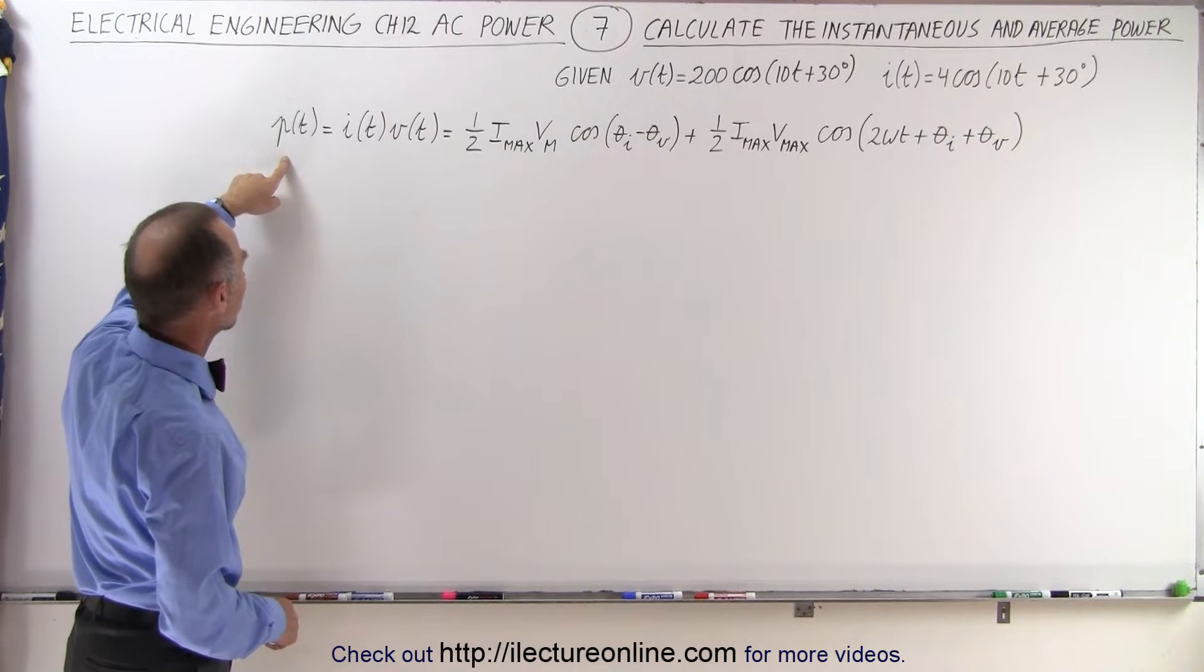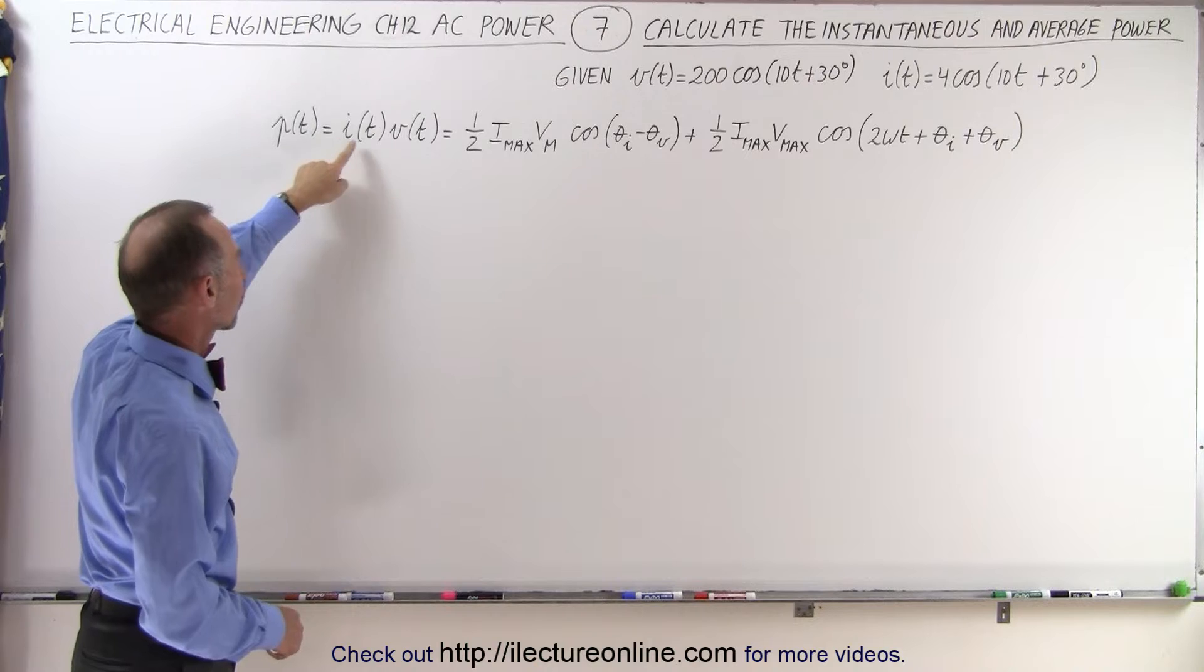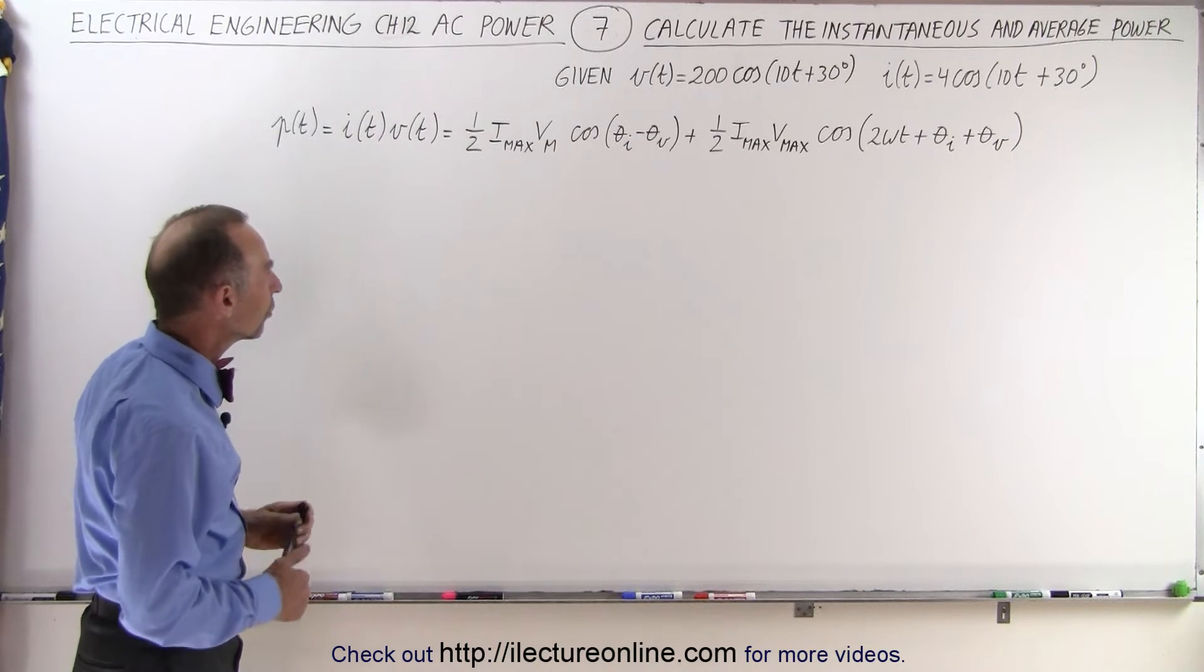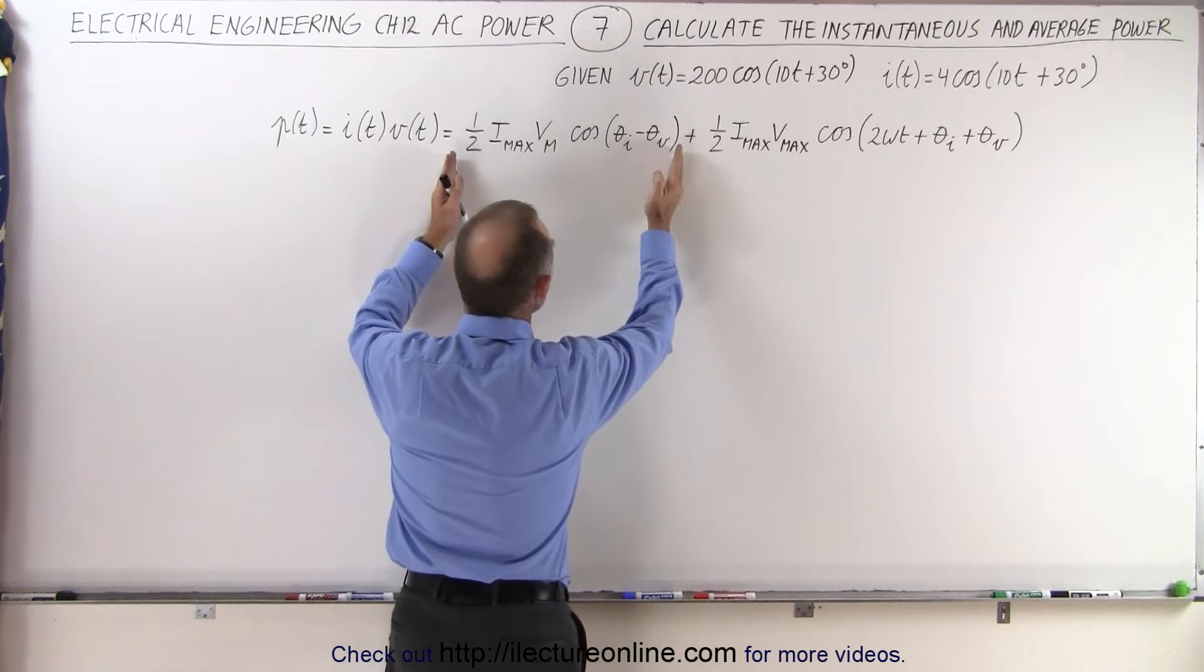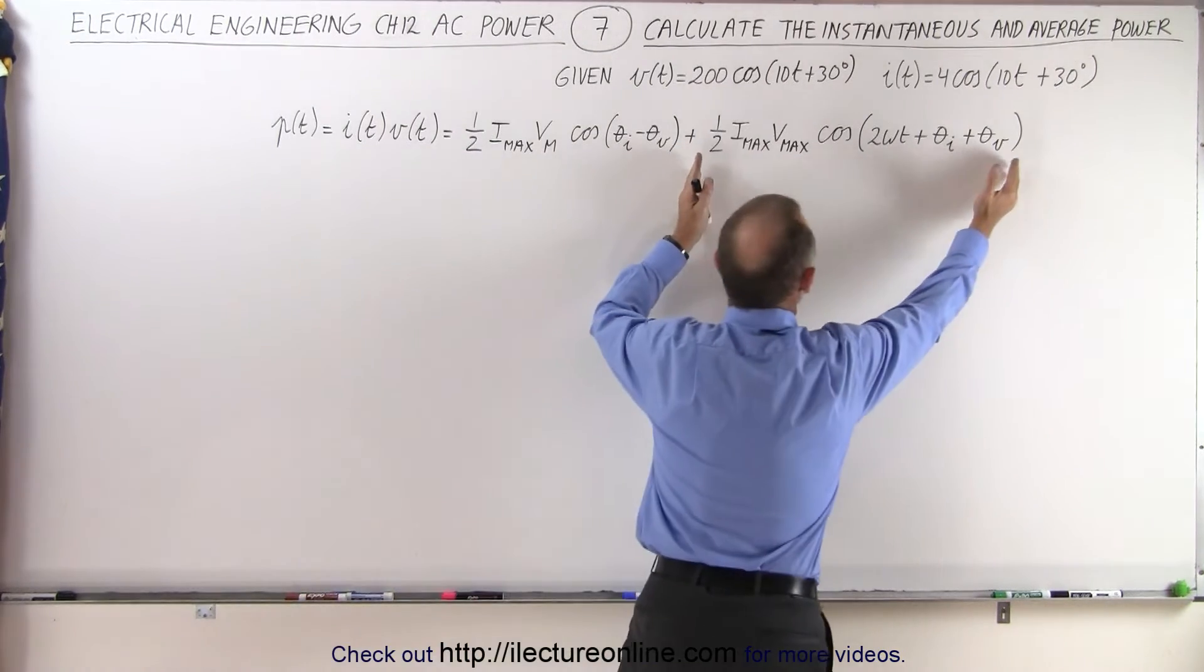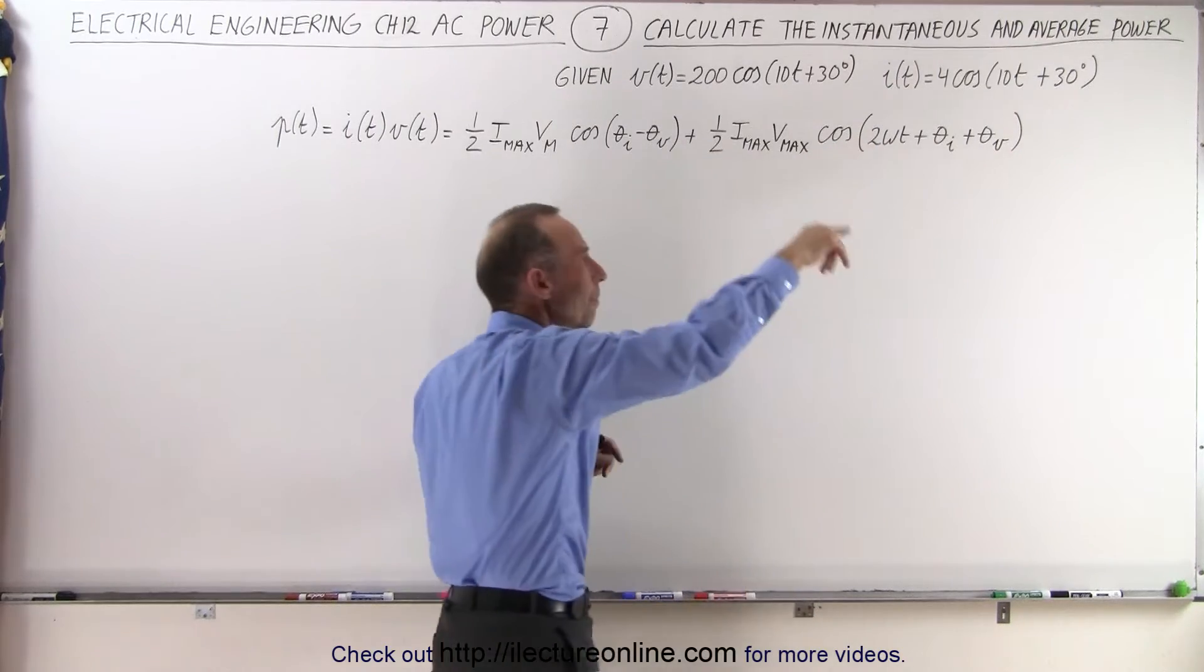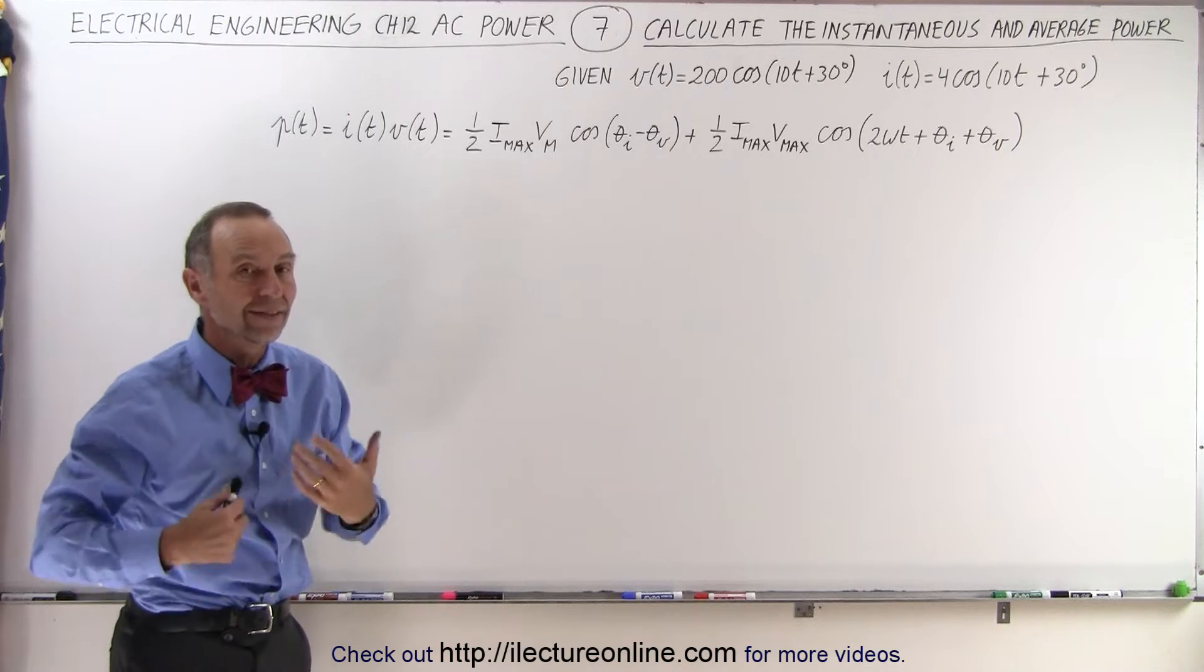Also notice that this is the equation we use: the instantaneous power is equal to the product of the instantaneous current and the instantaneous voltage. Notice that gives us a constant term which ends up being the average power, and then we have the oscillating portion which oscillates about the line that's equal to the average power, which then gives us the instantaneous power.